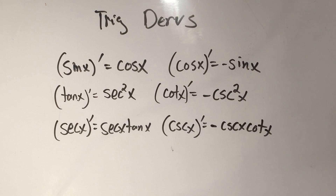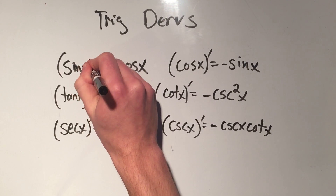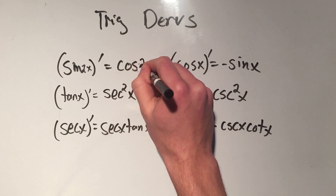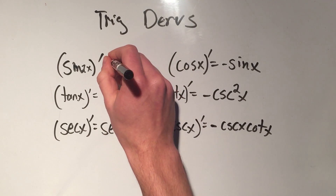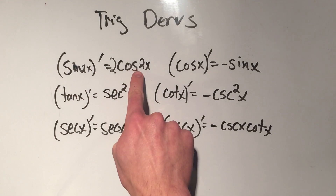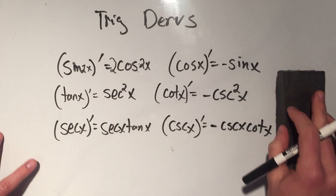Don't forget that the chain rule still applies with trig derivatives. So for example, if this was sine of 2x, the derivative would be cosine of 2x, but I would need to multiply by 2 out front by the chain rule, because the derivative of 2x is 2.